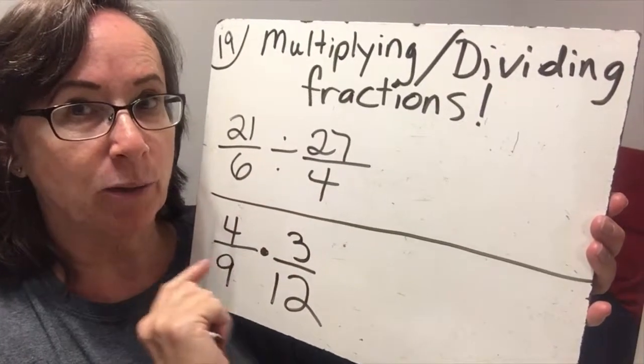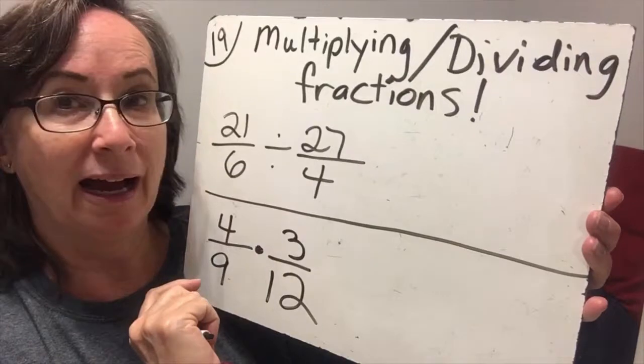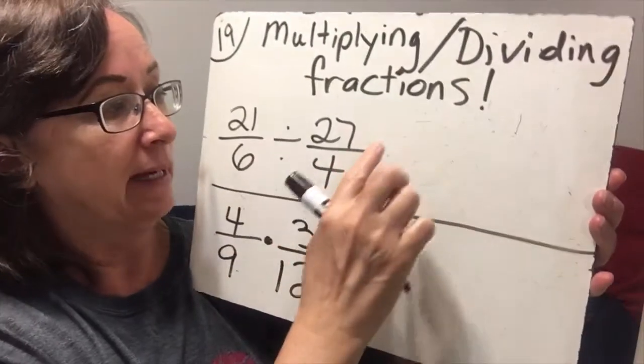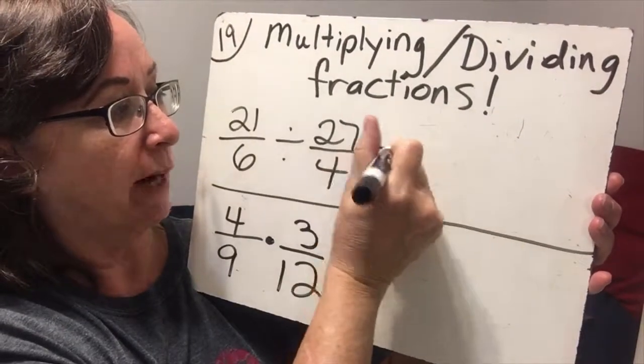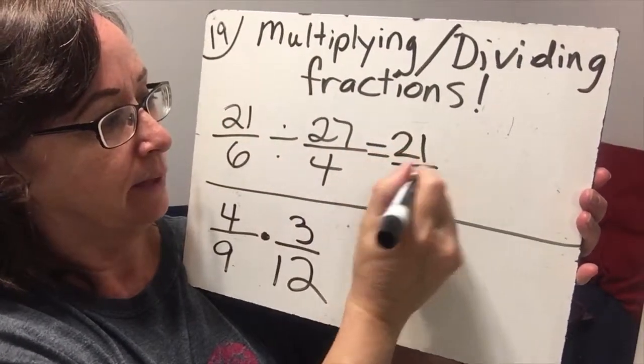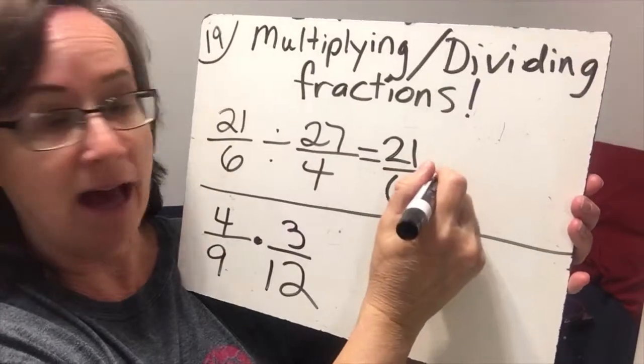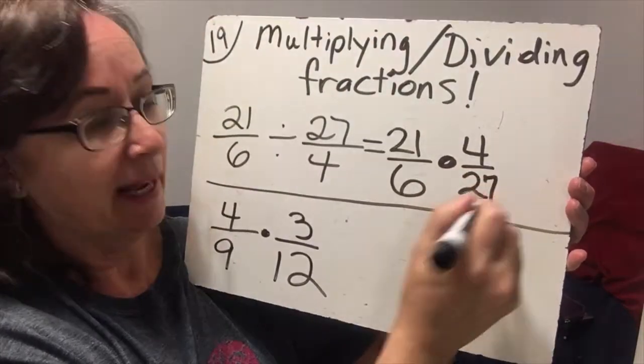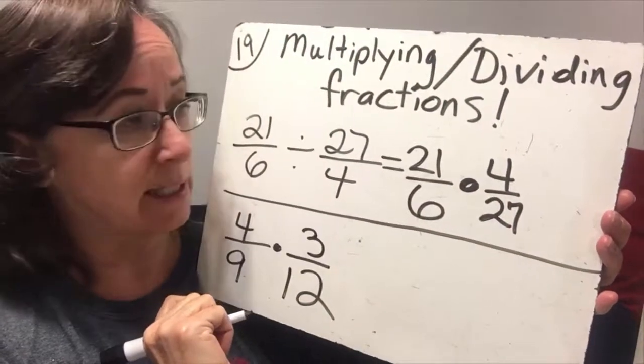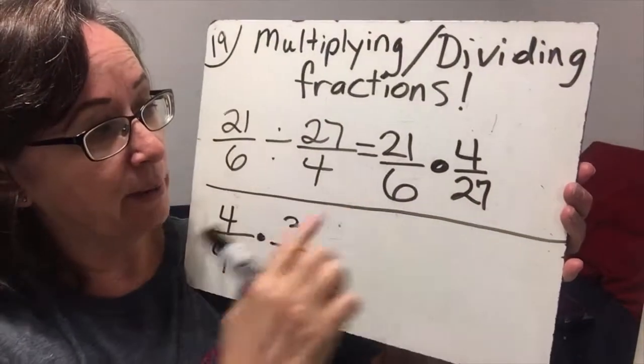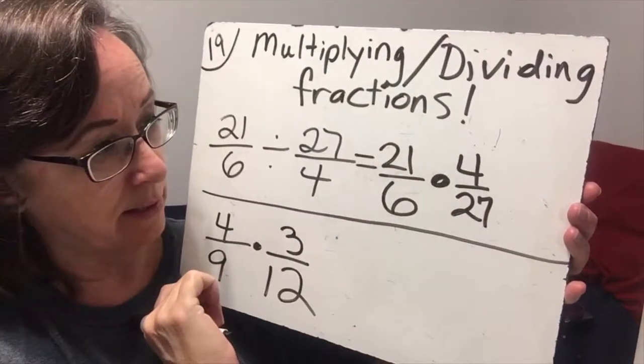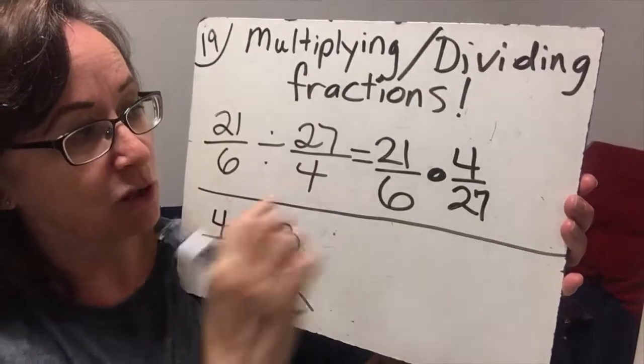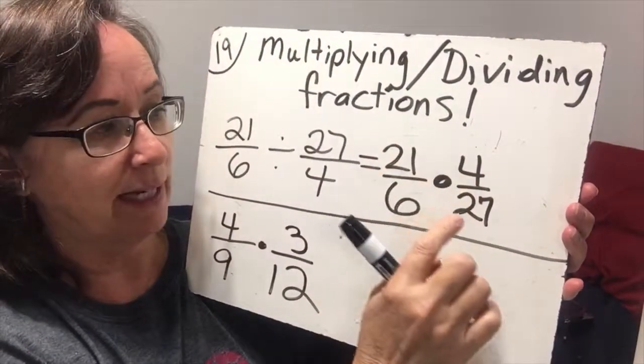Now you have to see what your teacher wants you to do. I'm going to do it the long way, and your teacher may allow you to take a shortcut. But I'm going to just rewrite it as 21 divided by 6 times 4 over 27. And that might be the best way to do it, just to keep things neat. So now we've got 21 and 27, and we've got 4 and 6.